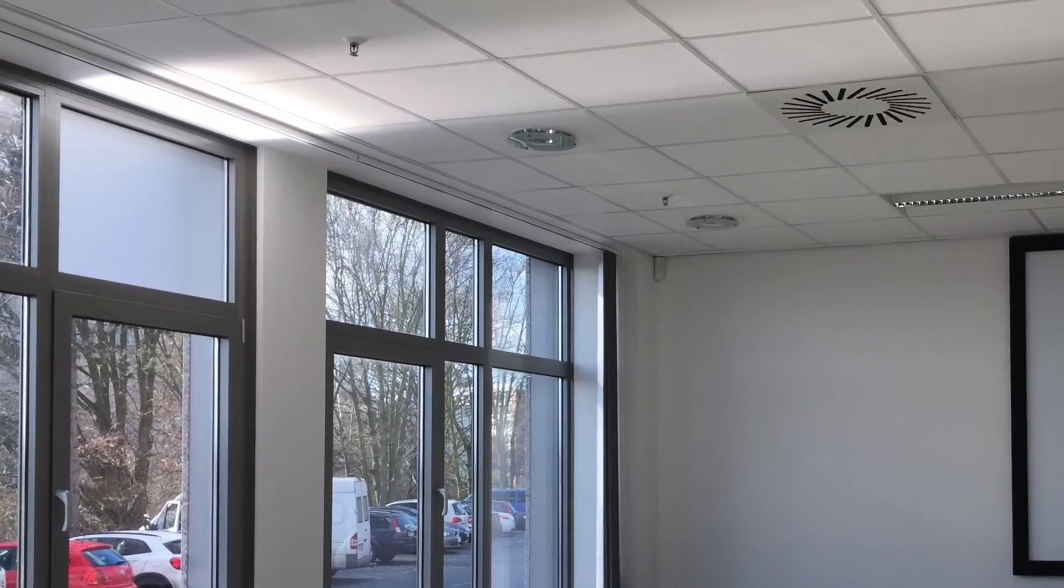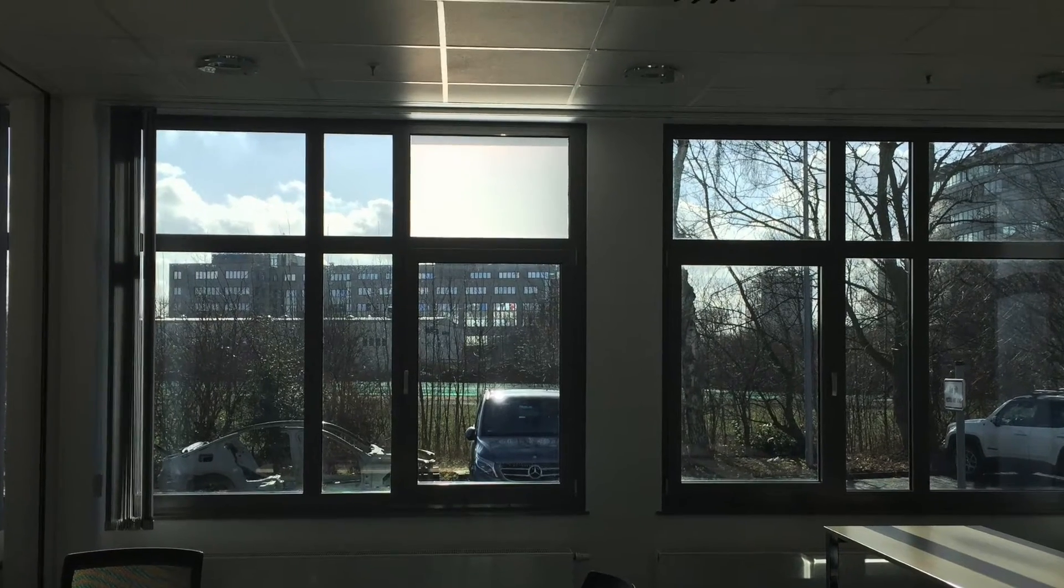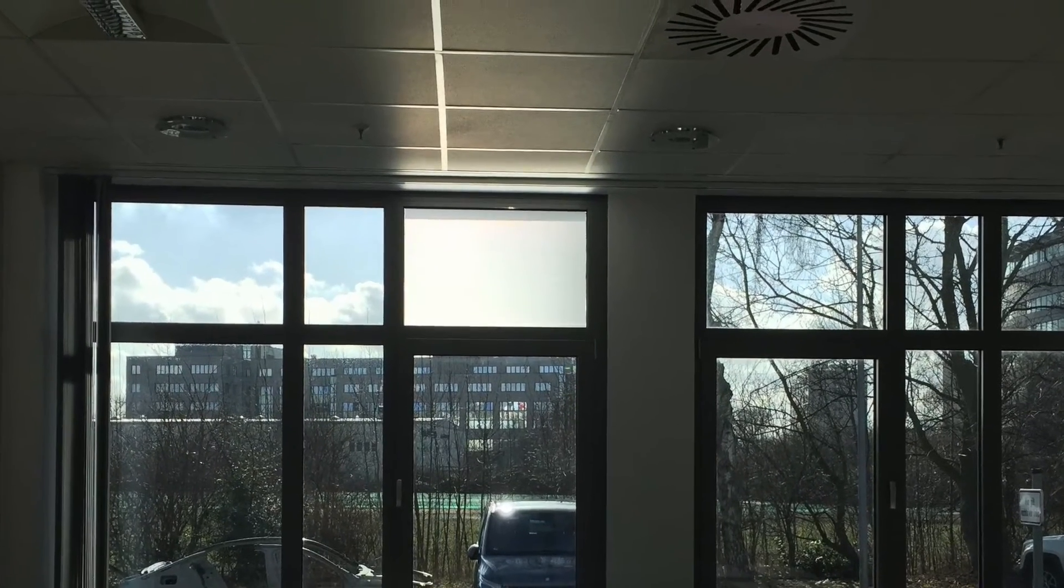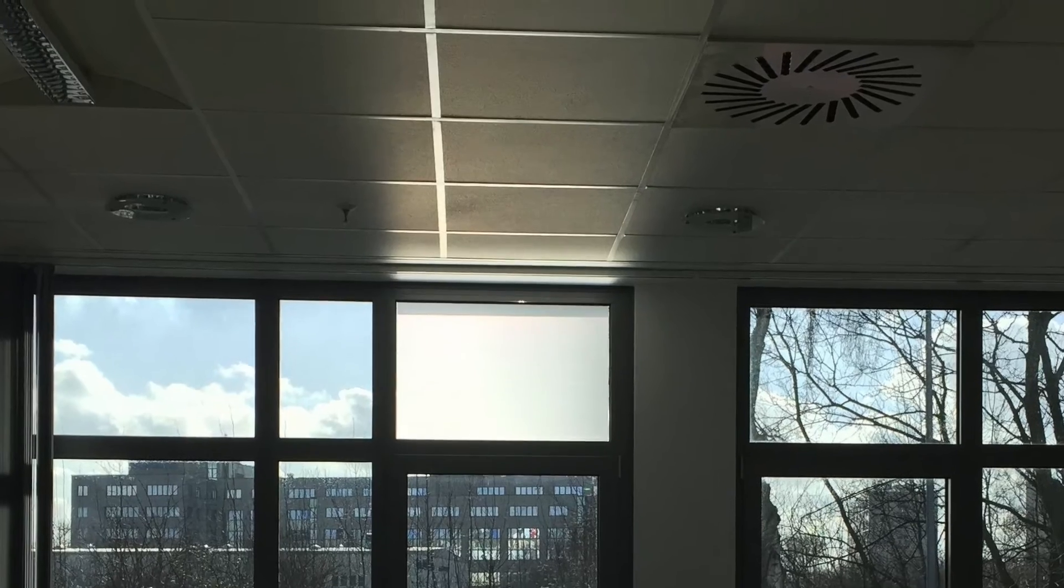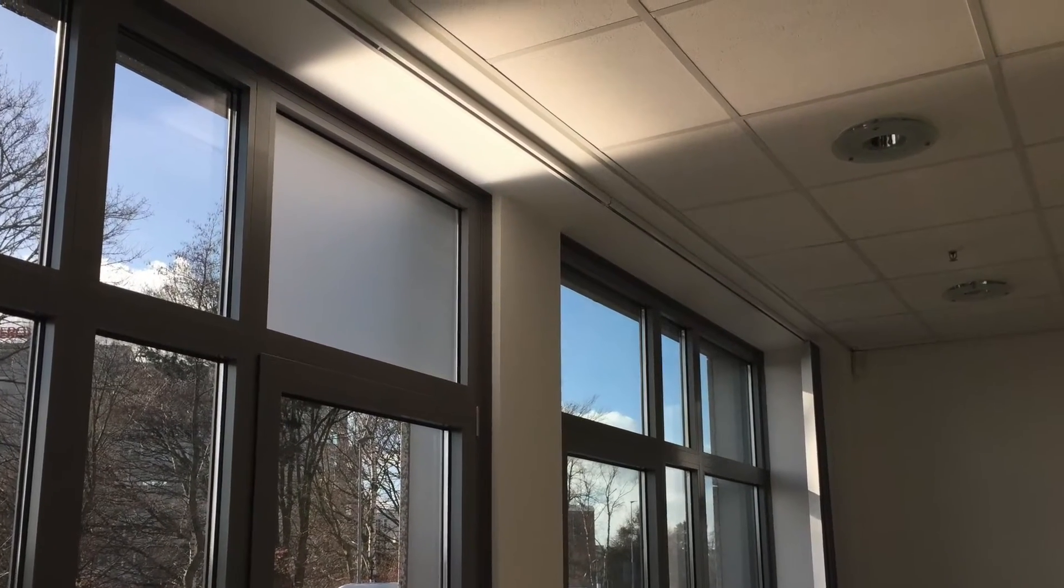3M Daylight Redirecting Film is a simple and effective window film that brings natural daylight deeper into buildings. It provides real benefits to occupants within the building and saves energy by reducing the need for artificial light. This video takes you through the simple step-by-step installation process.